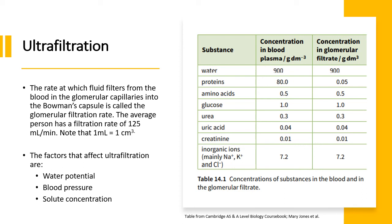Ultrafiltration is simply the process by which blood is filtered through the glomerulus into the Bowman's capsule, carrying with it water, amino acids, glucose, urea, uric acid, creatinine, and inorganic ions. It does not carry proteins, red blood cells, or white blood cells — that is why your urine doesn't come out red, at least if you drink enough water. If you were to test a person's urine and found proteins in it, that would suggest some kind of damage in the kidneys. That is why during a medical checkup they do a urine test — not only to check for blood sugar, but also to check for things like this. Factors that affect ultrafiltration include water potential, blood pressure, and solute concentration.